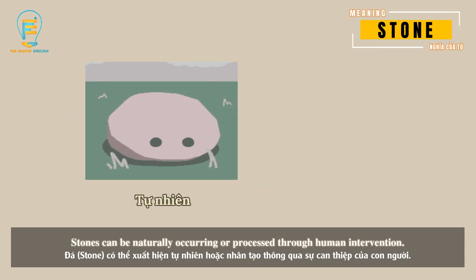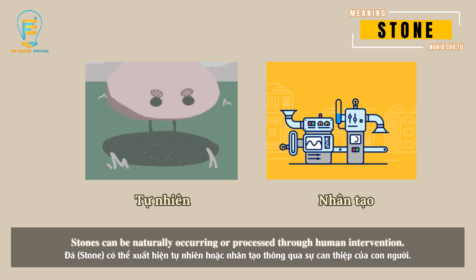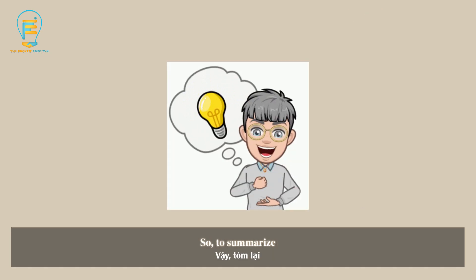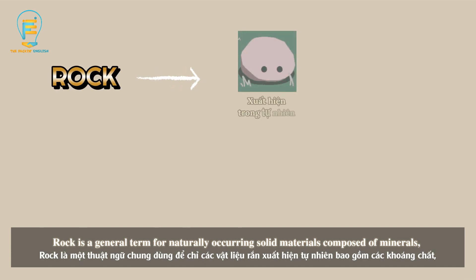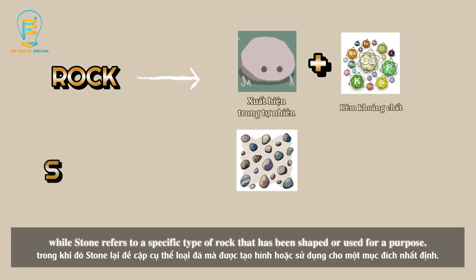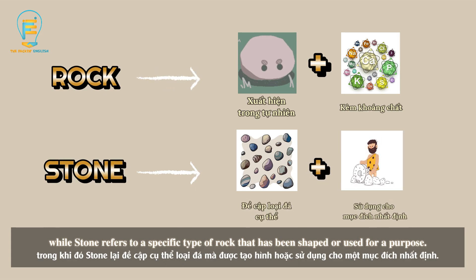Stone can be naturally occurring or processed through human intervention. So to summarize, rock is a general term for naturally occurring solid materials composed of minerals, while stone refers to a specific type of rock that has been shaped or used for a purpose.